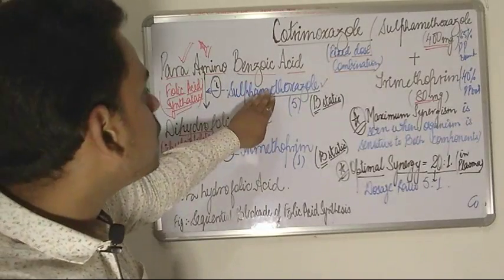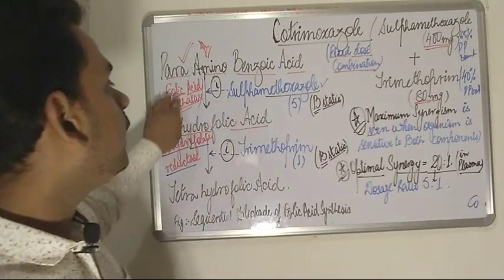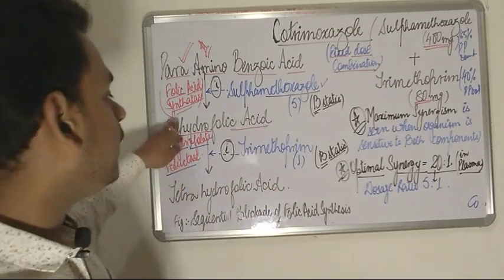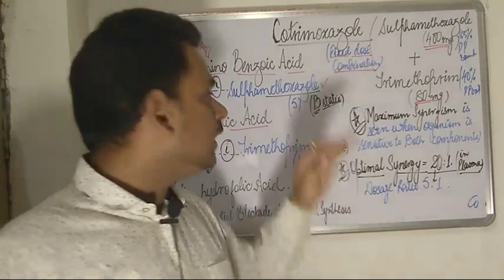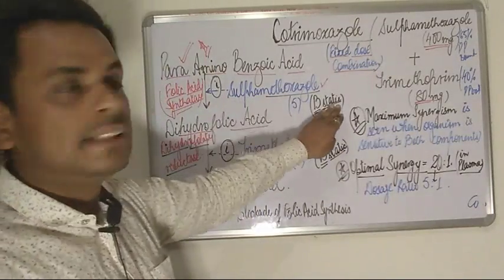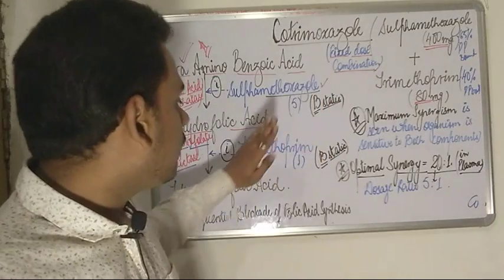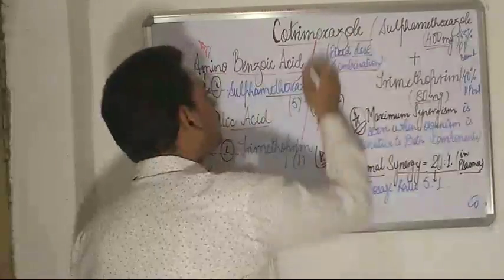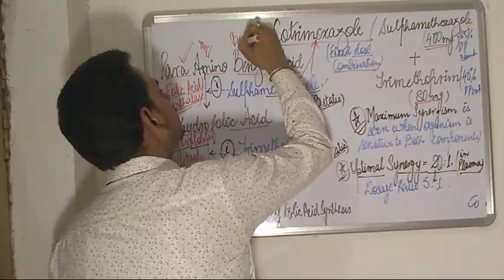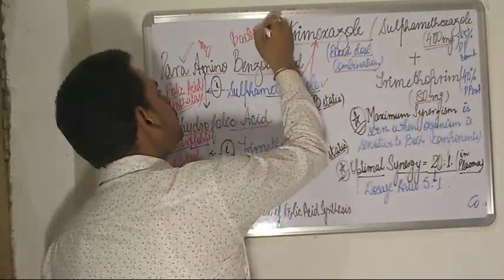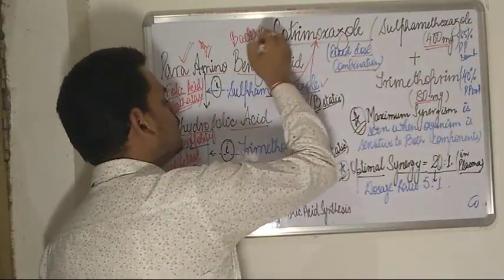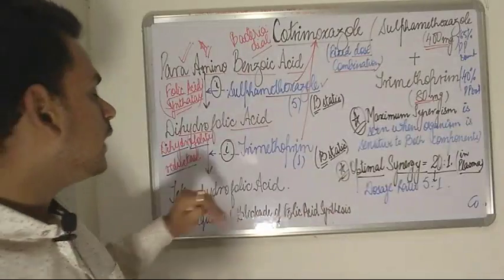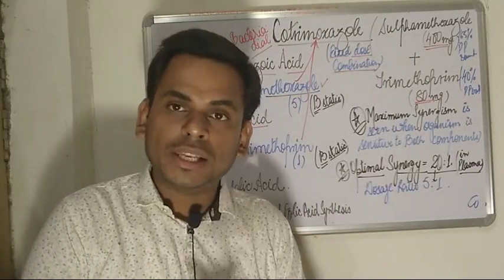The action of cotrimoxazole's constituents is by selective inhibition of these two enzymes. Sulfamethoxazole selectively inhibits folic acid synthase, whereas trimethoprim selectively inhibits dihydrofolate reductase. Individually, sulfamethoxazole is bacteriostatic and trimethoprim is bacteriostatic, but the combination of sulfamethoxazole and trimethoprim becomes bactericidal — the sequential blockade of folic acid synthesis.